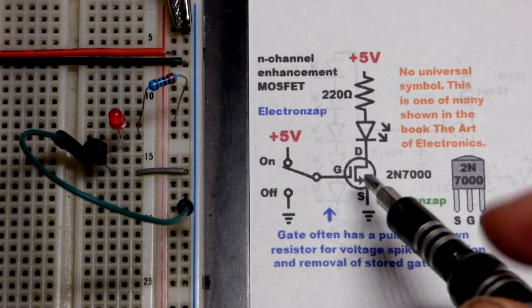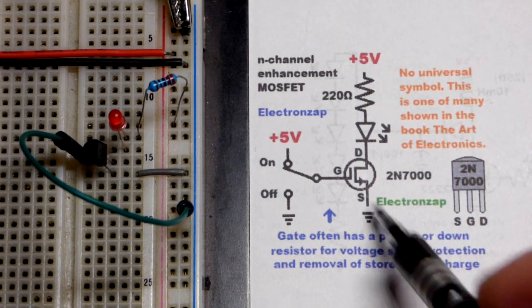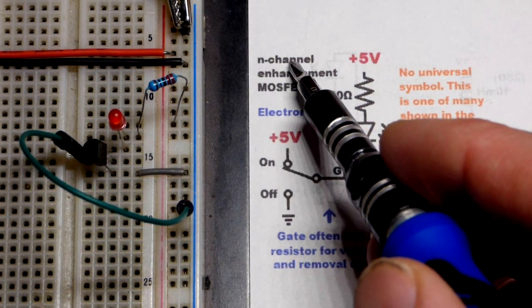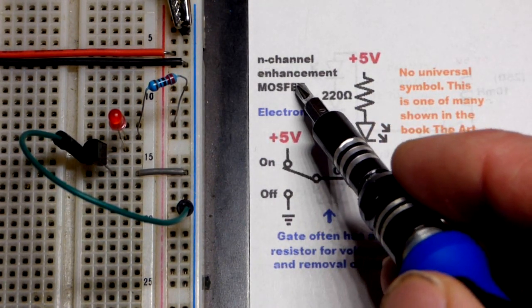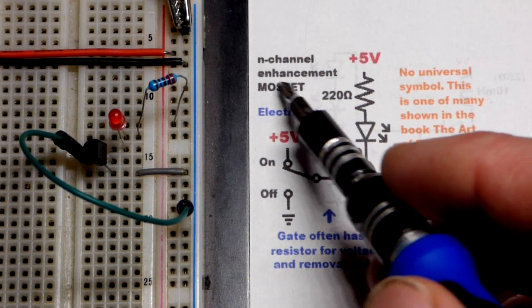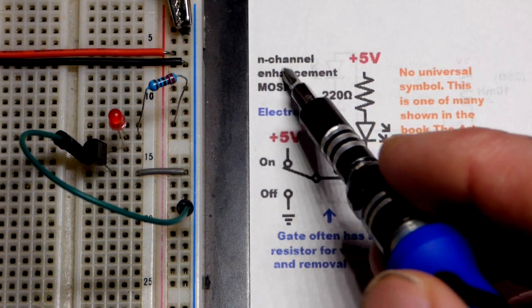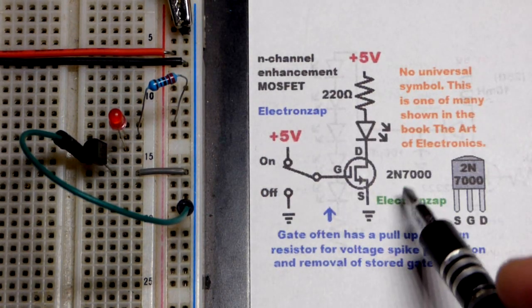In this video I thought we'd go over the N-channel enhancement mode MOSFET. To begin with, there's also the P-channel enhancement mode MOSFET, and for both of those there's also the depletion mode MOSFET. But all I come across ever is the enhancement mode MOSFETs, so we're using the N-channel here.